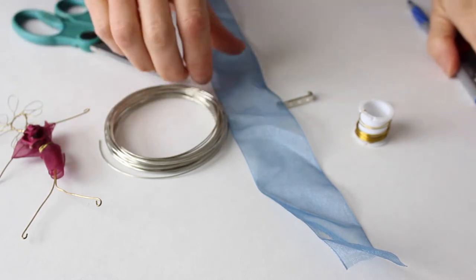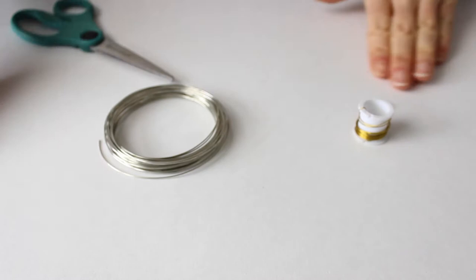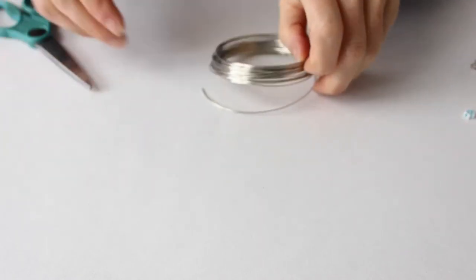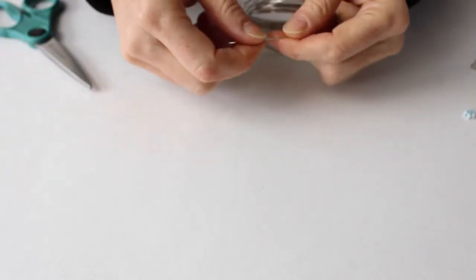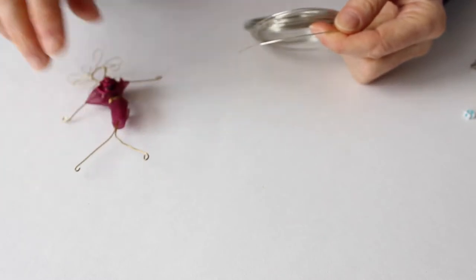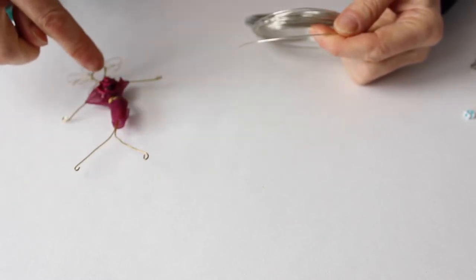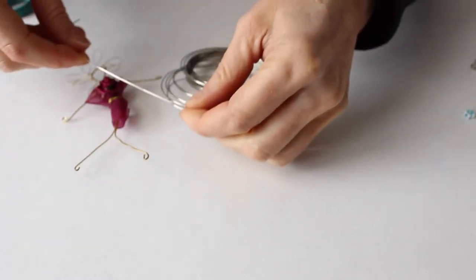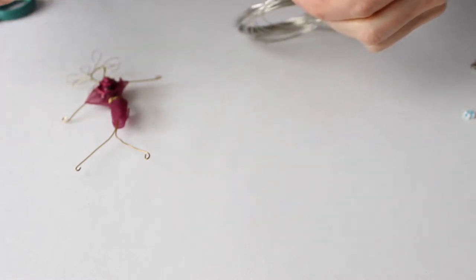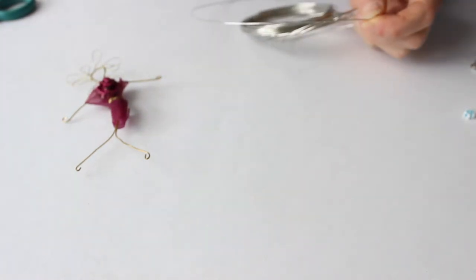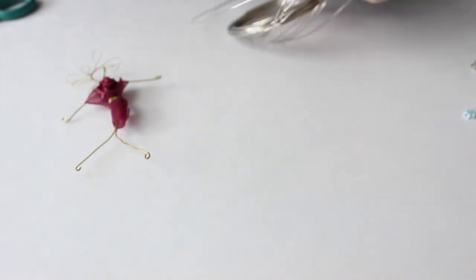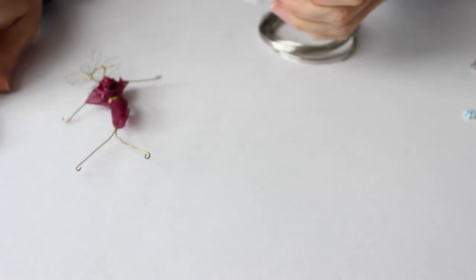To get started, you're going to take your wire and cut a piece that's going to be for the head and the legs. We're going to cut it probably about a foot long. The size can vary depending on how you want it to look.